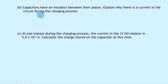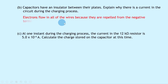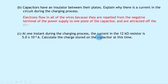Part B says capacitors have an insulator between their plates. Explain why there is a current in the circuit during the charging process. Electrons flow in all of the wires because they are repelled from the negative terminal of the power supply to one plate of the capacitor, and are attracted off the other plate towards the positive terminal of the power supply.